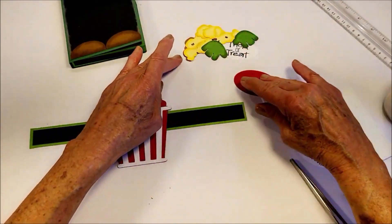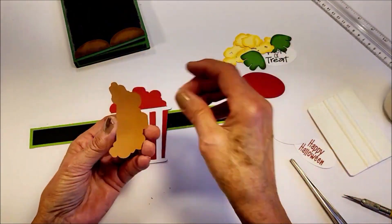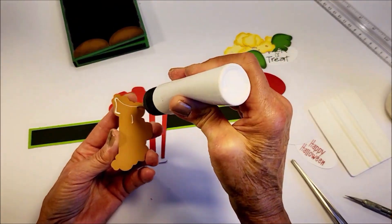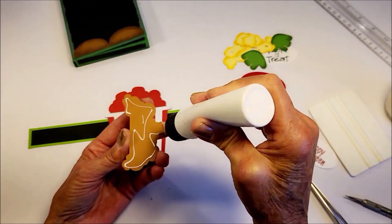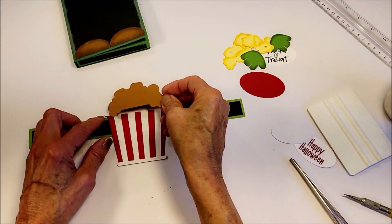And now we'll put on the popcorn layers. This is the backing for the popcorn. Line that up along those top edges.